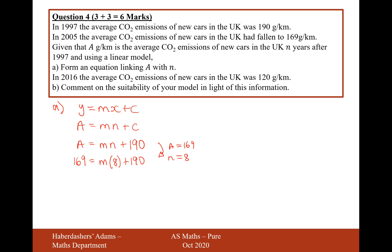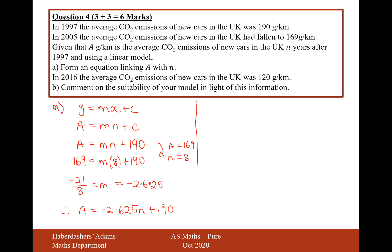So if I now minus 190 from the other side and divide by 8, I can work out that it's going to be minus 21 over 8, which is the value for m — which works out to minus 2.625. So therefore the linear equation is going to be a equals minus 2.625n plus 190. You can clearly see the gradient is negative, which explains that the CO2 emissions are going down.